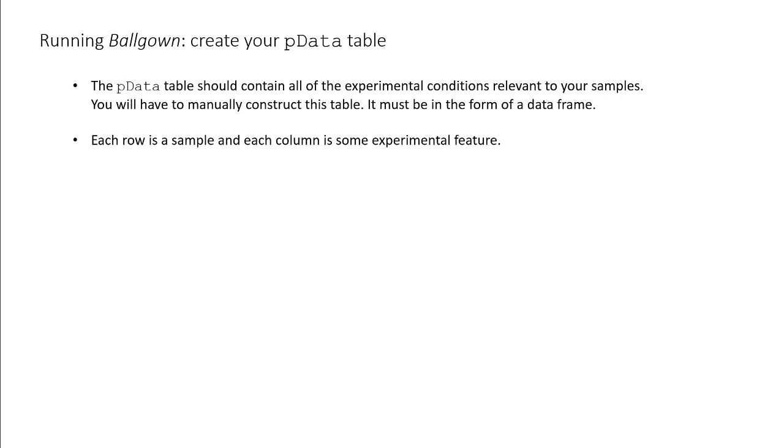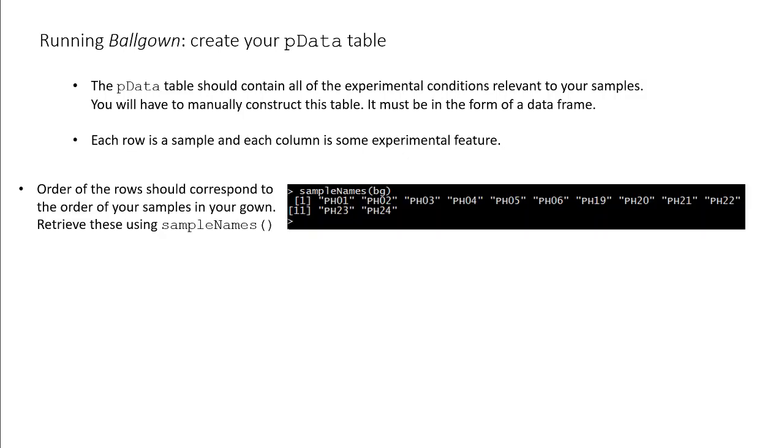Each column is some experimental feature, including sample identifiers or treatment condition. This table must be in the form of an R data frame. The order of the rows of your pdata table should correspond to the order of the samples in your gown object. You can retrieve these names using the sampleNames function.